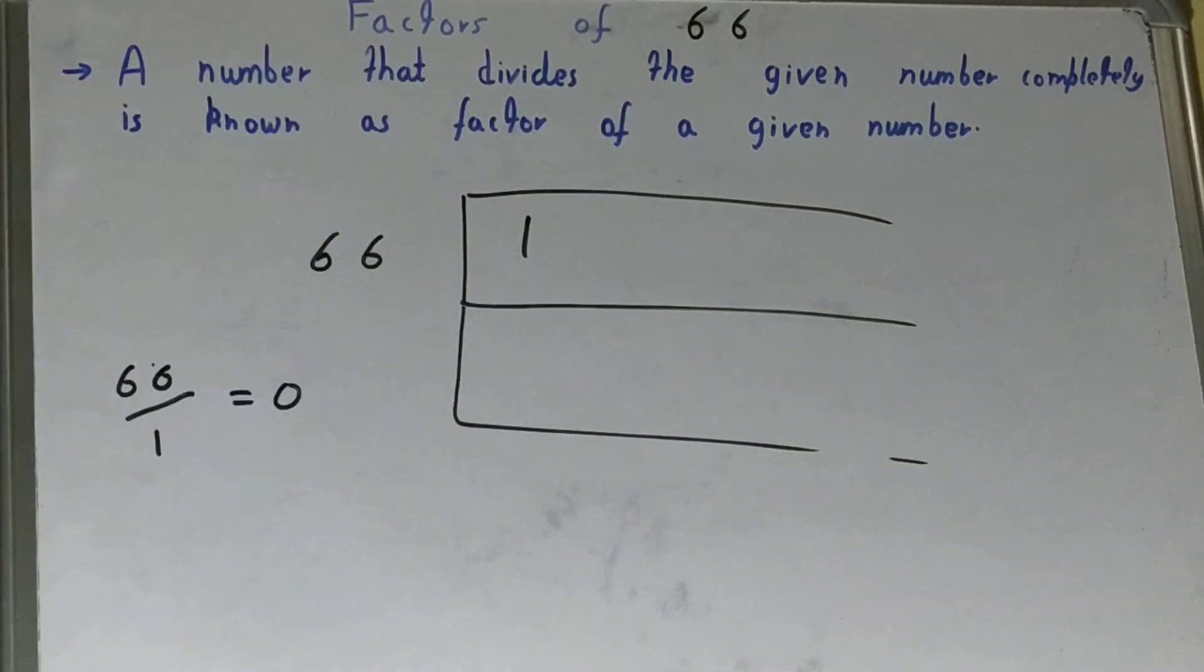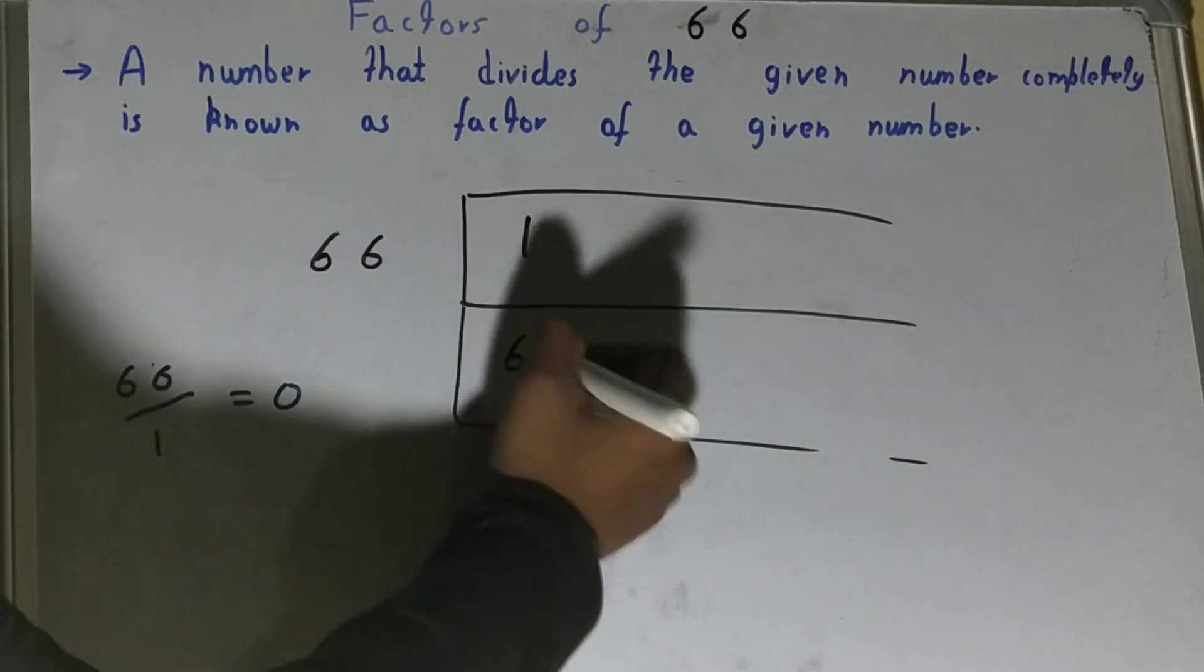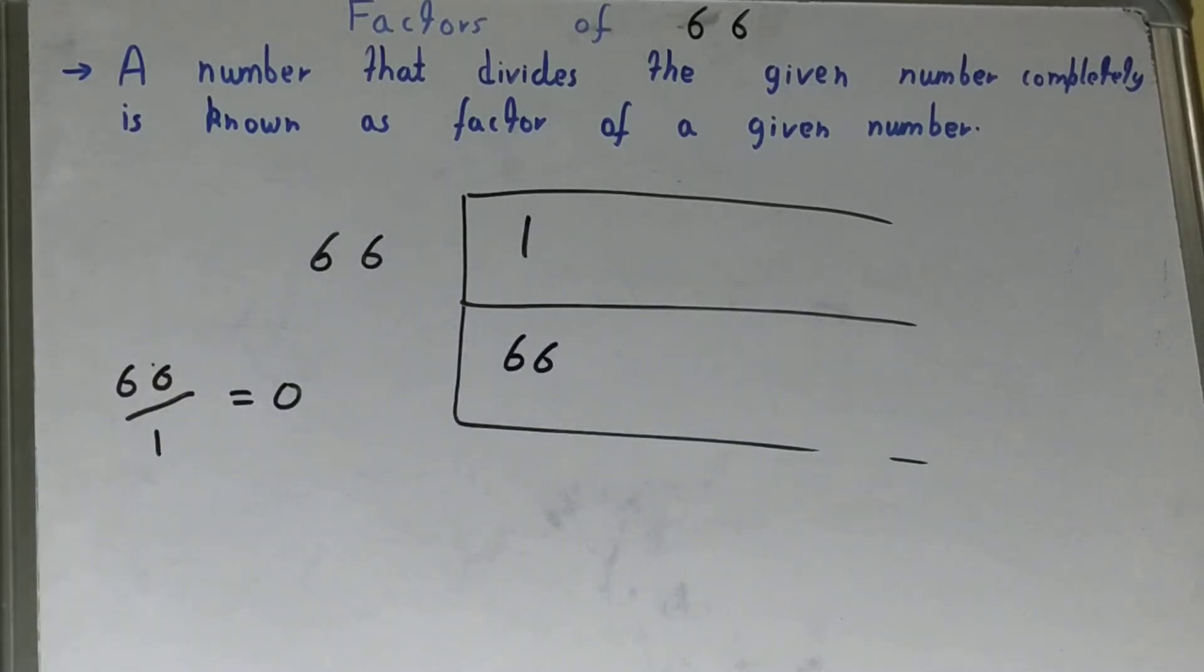With the help of 1, we can also determine another factor for 66. One times what is 66? One times 66, so 66 is also a factor. After 1 comes 2. If you divide 66 by 2, will you get the remainder zero? Yes.